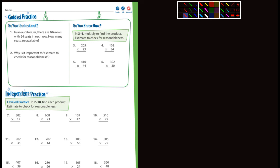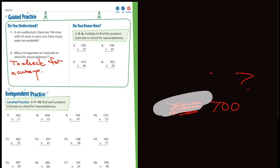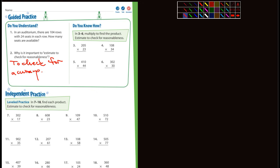Then it says, number two, why is it important to estimate to check for reasonableness? I would say to check for accuracy. I mean, if you come up with an answer, let's say it's 216, and then you do an estimate and you come up with an estimate of 700, there's a problem because it's not even close. Your answer should be pretty close to whatever estimate you come up with. So estimating is, as they suggest here, a good way to check for your answer to see if it's correct or not.